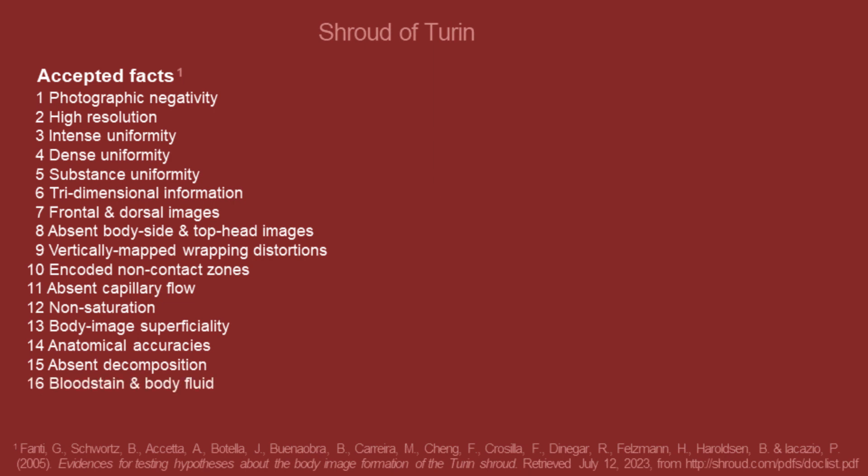There is an absence of body side and top of head images. There are vertically mapped wrapping distortions and non-contact zones that were encoded through empty space. There is an absence of capillary flow and non-saturation. There is a presence of body image superficiality. Anatomical accuracies are present, such as scourge marks. There is an absence of decomposition, a presence of bloodstain and body fluid, and the Shroud is directionless, meaning there is an absence of brushstrokes.